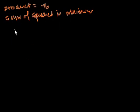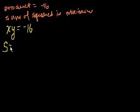So their product is minus 16. So we know that x times y is equal to minus 16. And then what's the sum of their squares? So let's just say the sum of squares, I'll just call that s. The sum of their squares is going to be equal to x squared plus y squared. And so this is the function that we want to optimize. And in this case, we want to find the minimum value. So how do we do this problem?